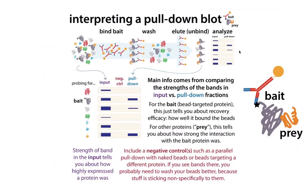Typically what you'll see is on the left, you'll see an input lane. This is just showing you what they put in. This is important because if there wasn't any of your bait in the sample, how are you going to see if it's in the pulldown? Or if there was a lot of one protein in the input and then you see a little bit of it pulled down, that's a lot less significant than if there's a little tiny bit in your input and then all of that is still in your pulldown. So the input is important to compare how much was there to start with versus how much actually gets pulled down.